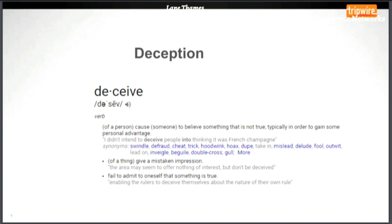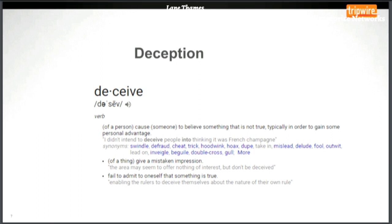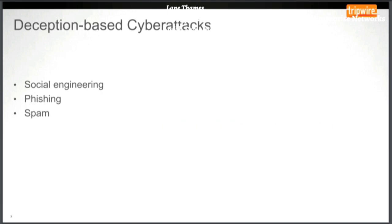Let's talk about deception. By definition, it's causing someone — or in our case something like automated software — to believe something that's not true so that we can gain something out of it. That's why we use deception with technologies like honeypots. Some of the familiar deception-based terms we hear day-to-day: social engineering, phishing, and spam are all types of deception attacks.